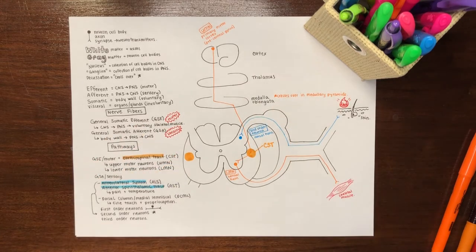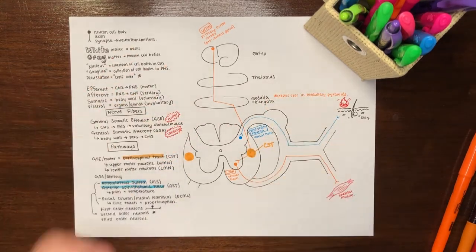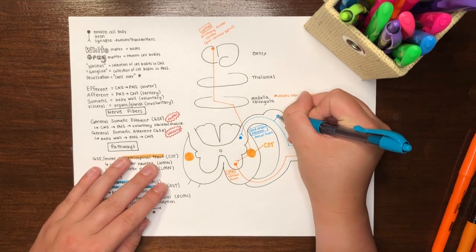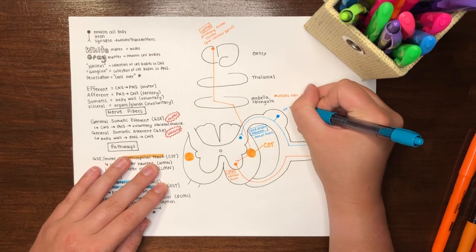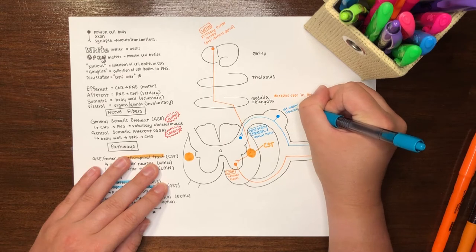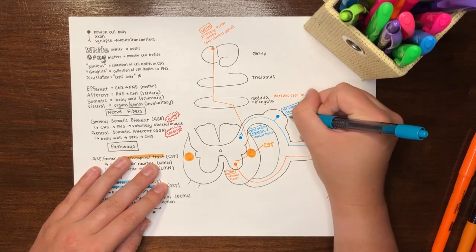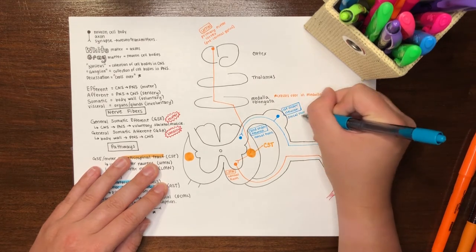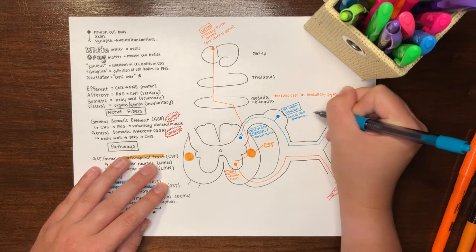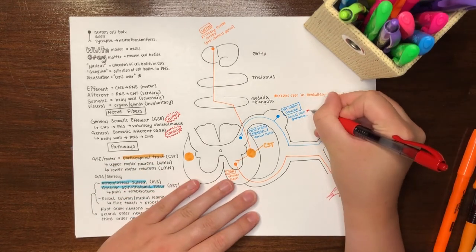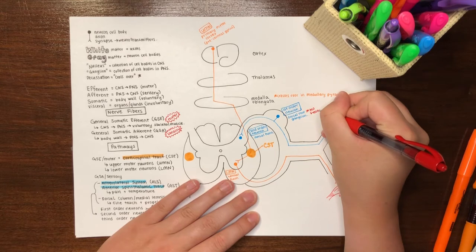But wait! Where is the cell body of our first-order neuron? That's right! First-order neurons are pseudounipolar, and their cell bodies live within the dorsal root ganglion, where there is no synapse. For the love of all that is holy, nothing synapses in the DRG.